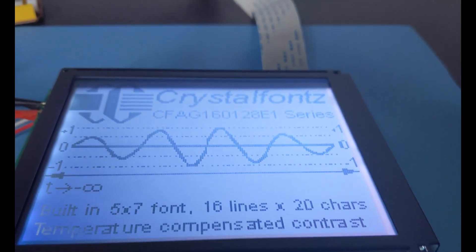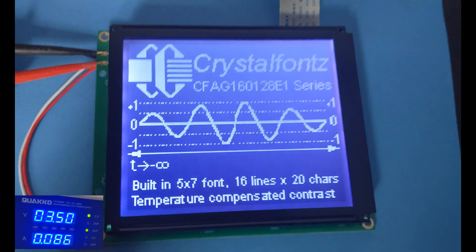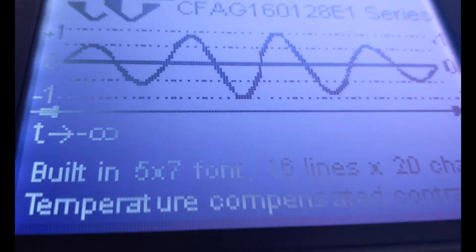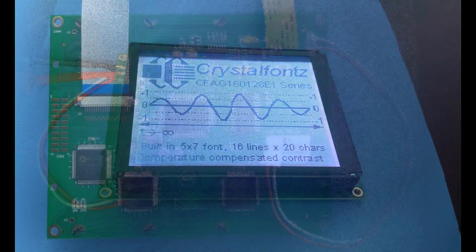As you can see, this graphic LCD is easy to read. It has a white LED edge light and FSTN negative transmissive glass. It has a 6 o'clock viewing angle so it should be mounted at or below eye level for best readability.